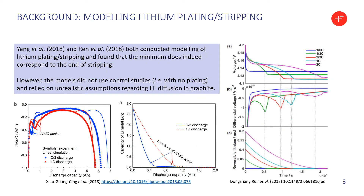In 2018, two different groups conducted computer modelling of the lithium plating and stripping process and both found that the minimum corresponds pretty much precisely to the end of stripping, where the standard de-intercalation reaction takes over. But there were two problems with these studies: they didn't use any control studies with no plating, and they relied on unrealistic assumptions regarding the diffusion of lithium ions in graphite.